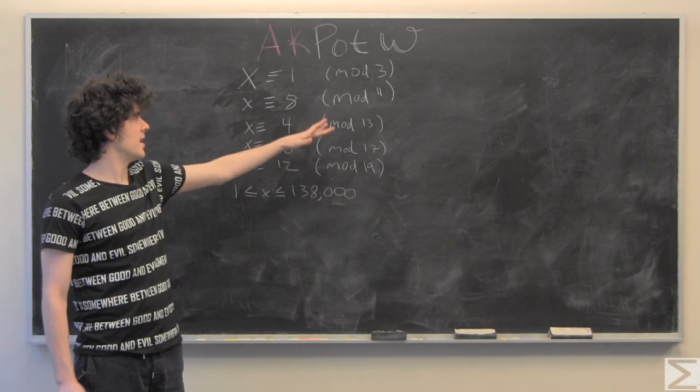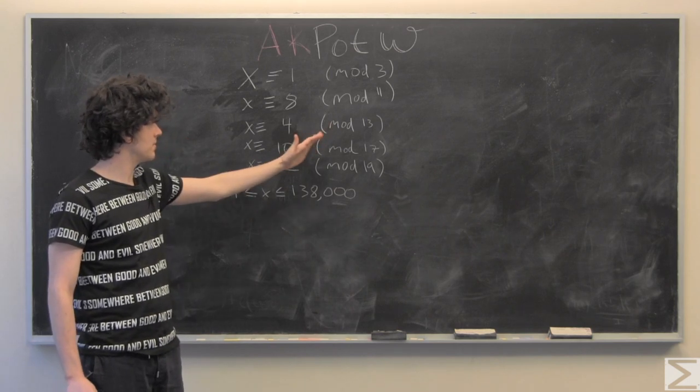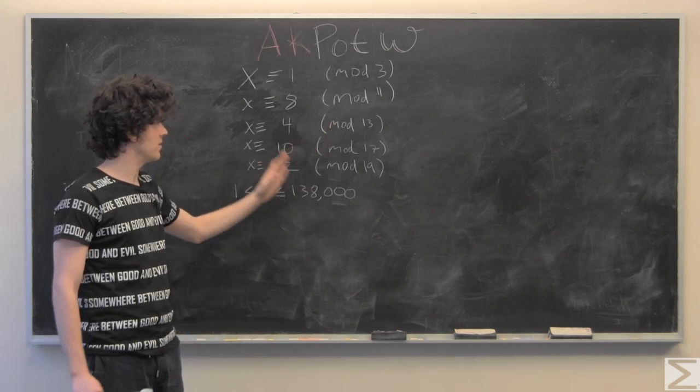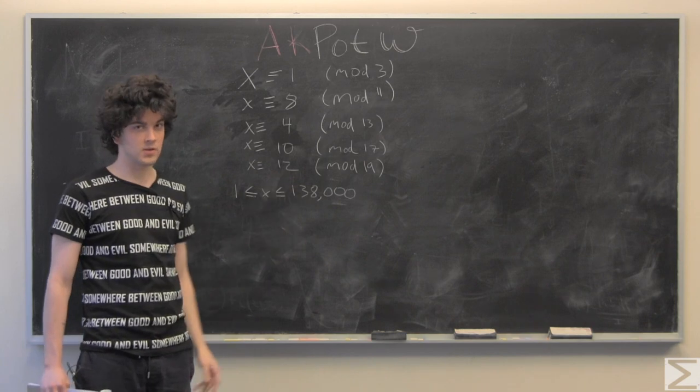And when you divide X by 11, you have a remainder of 8. When you divide X by 13, you have a remainder of 4, and so on.